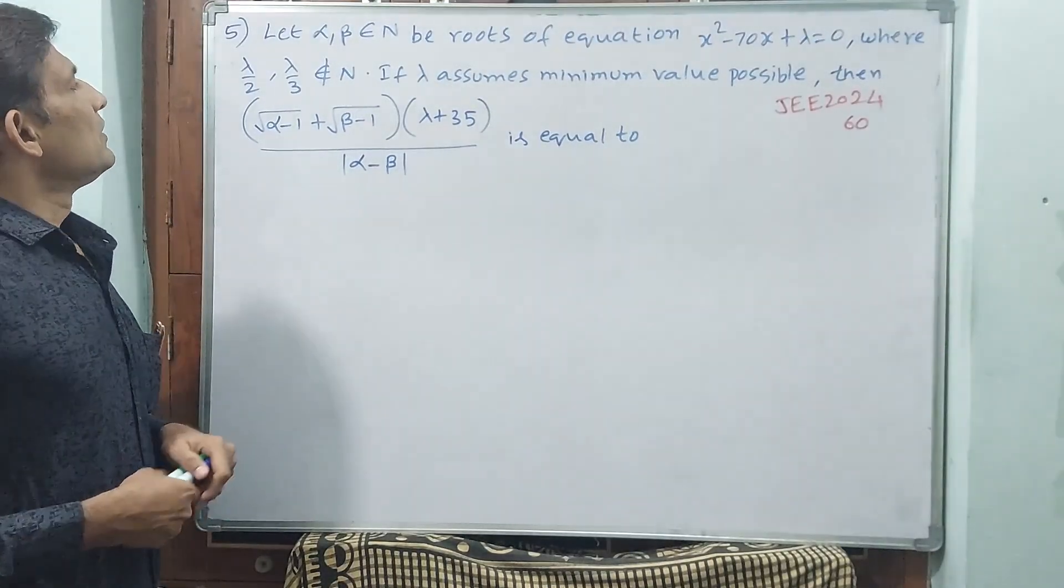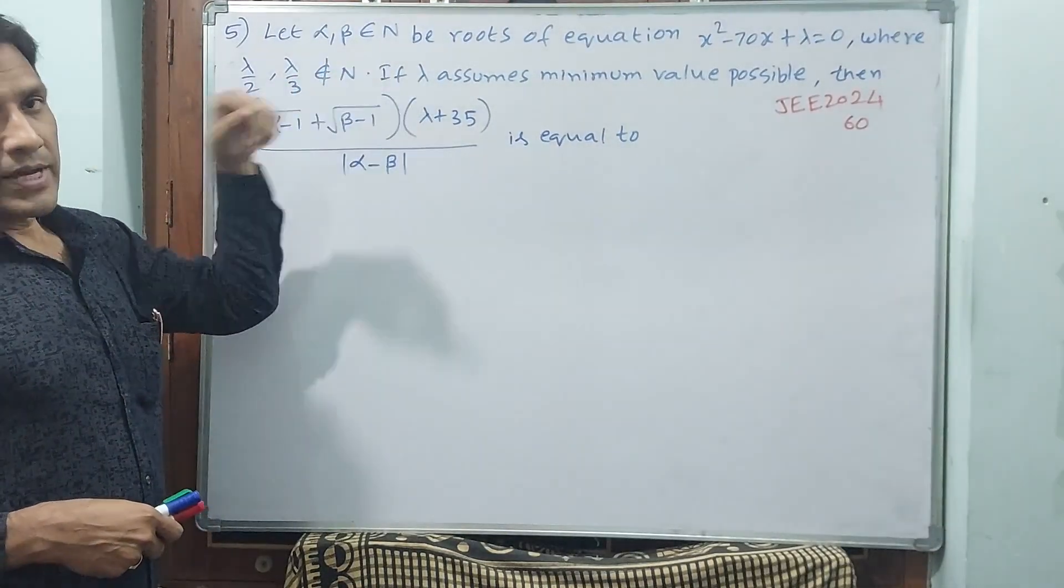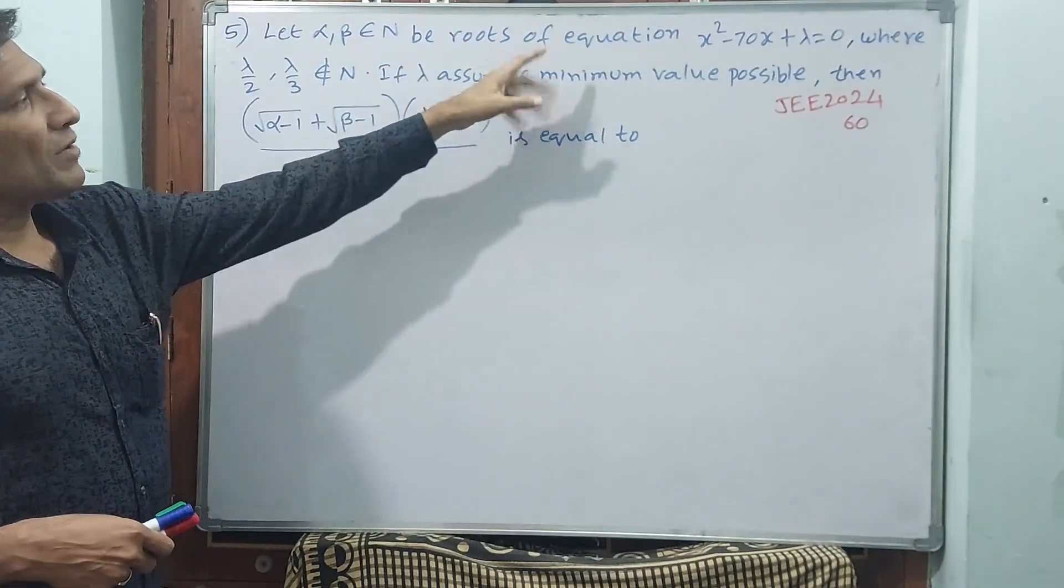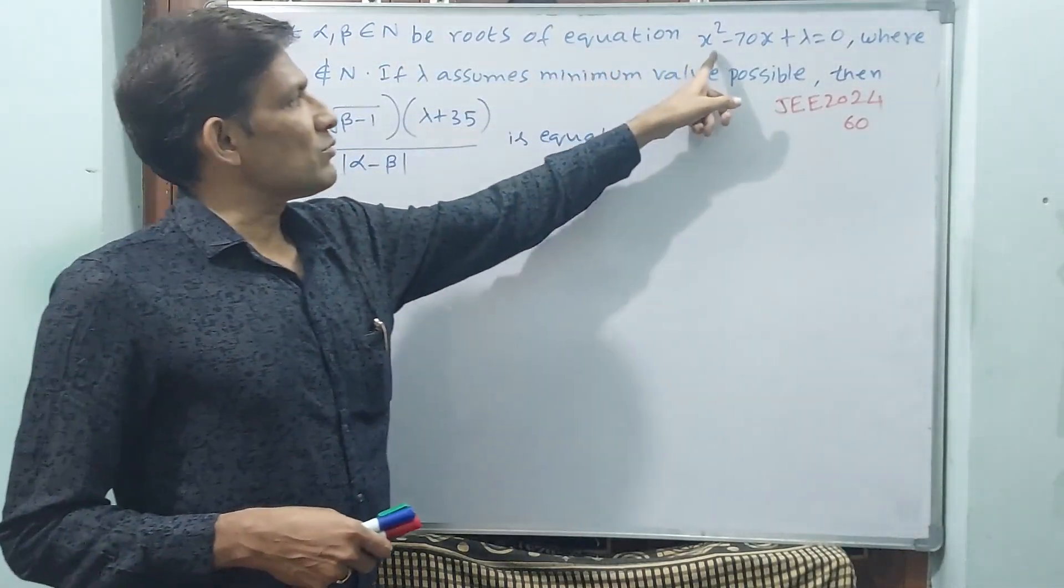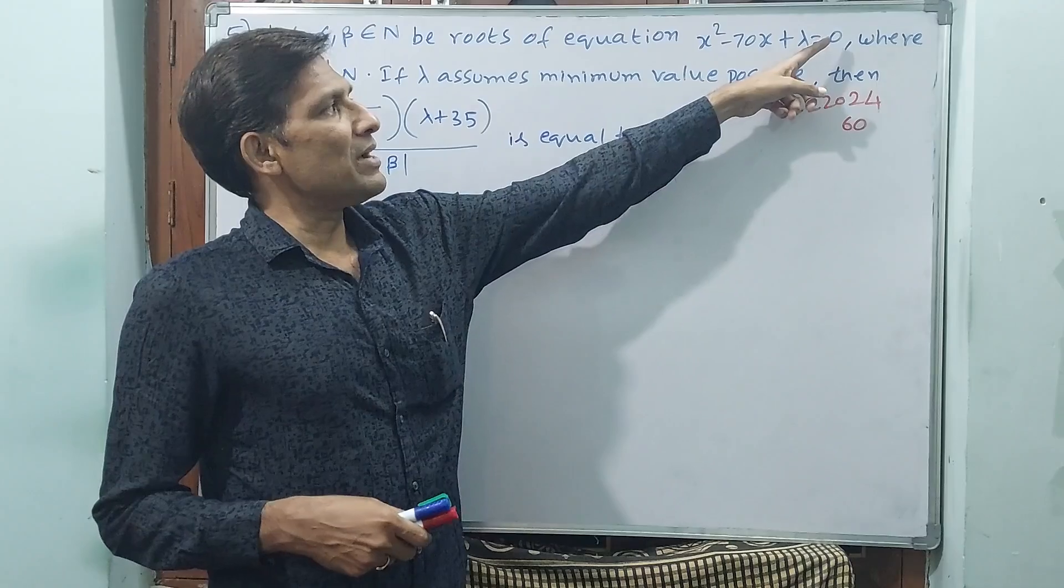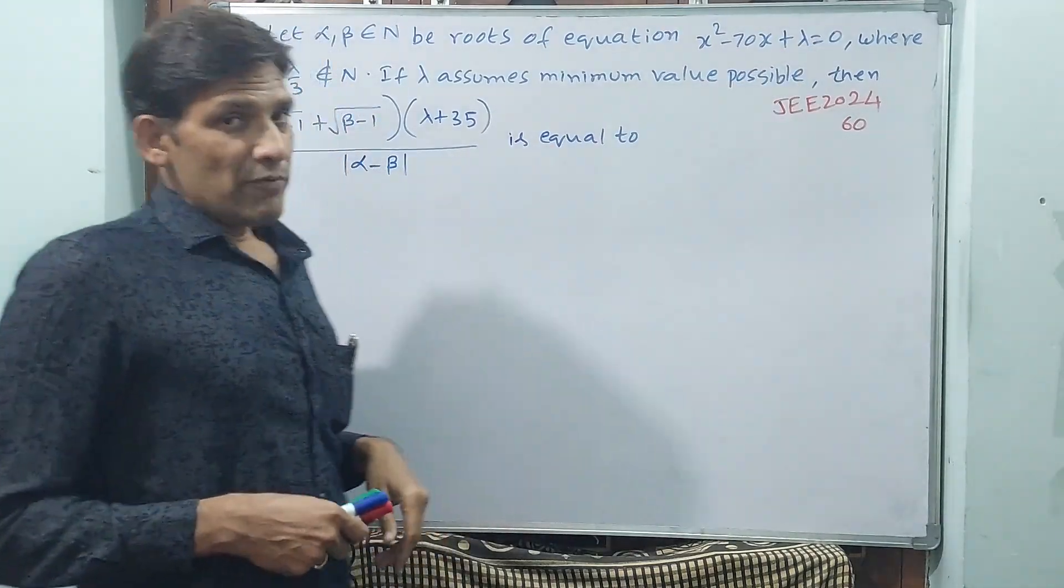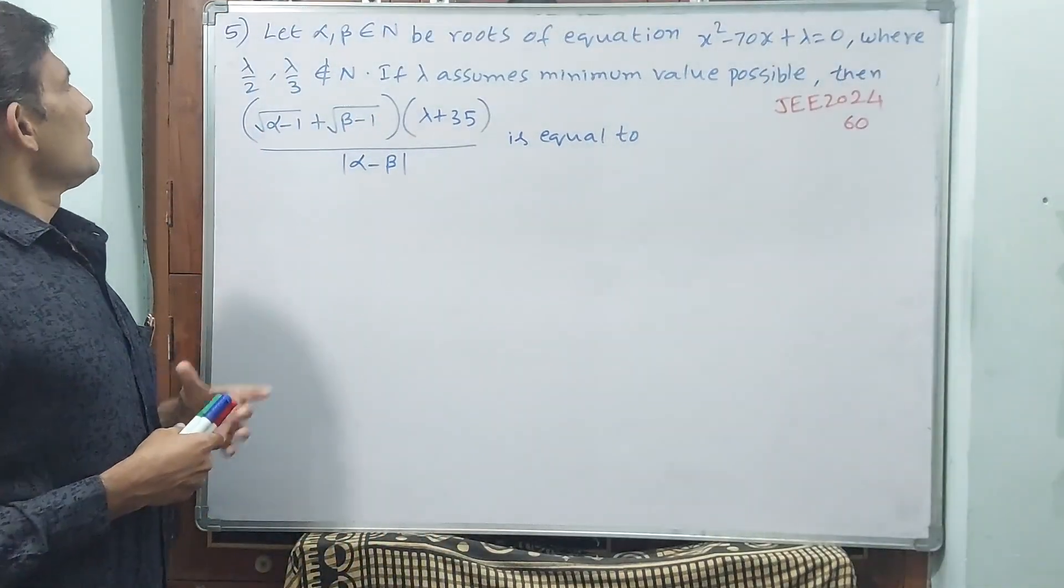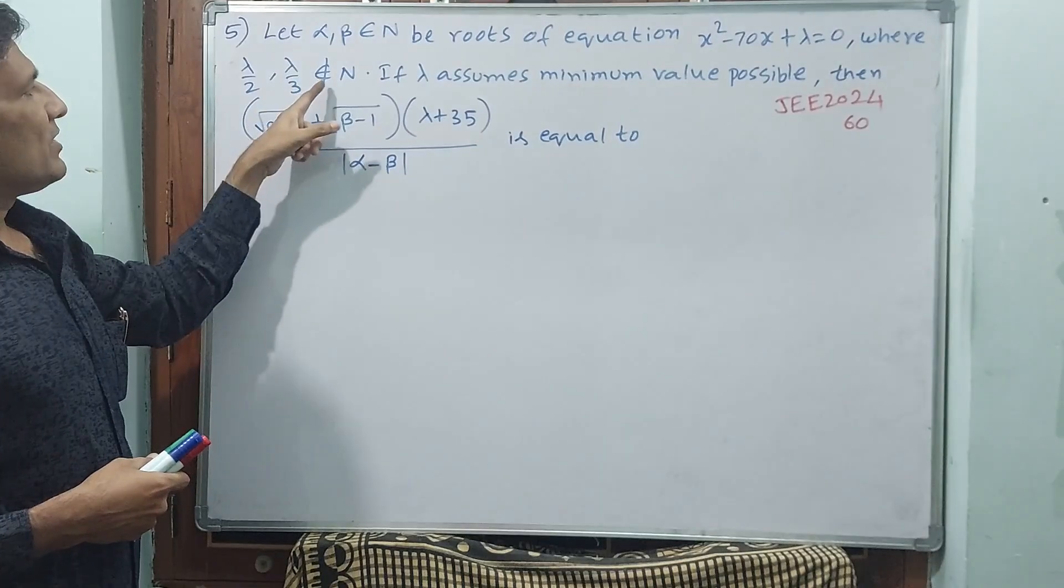Okay, see question number 5. Let α and β belong to natural numbers. If α and β are roots of the equation x² - 70x + λ = 0, where λ/2 and λ/3 do not belong to natural numbers.